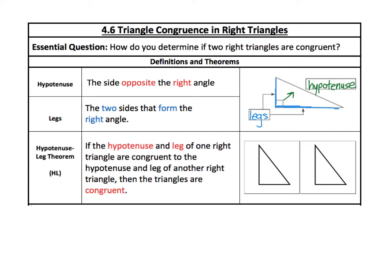Mark this up in the diagram. Start by adding a 90-degree angle to each triangle — the HL theorem only works if you have right triangles. We need a pair of congruent hypotenuses; remember the hypotenuse is across from the 90 and is also the longest side. We only need one pair of legs to be congruent. Mark the shorter leg the same on both, and now we have the hypotenuse of one triangle congruent to the other and a leg congruent to a leg — therefore these two triangles are congruent by HL.